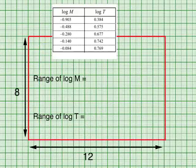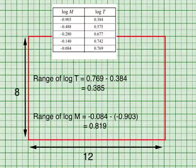Let's try another set of values. We will use similar approach in computing the range of log m and log t. In computing the range we always use the bigger value to subtract the smaller value so that we will always get a positive number.